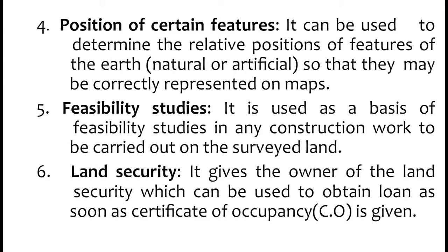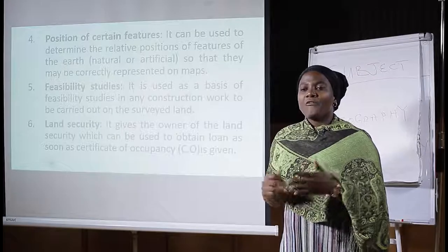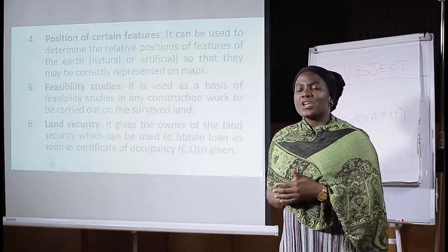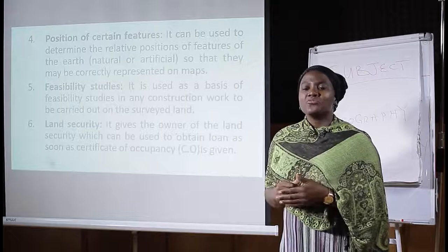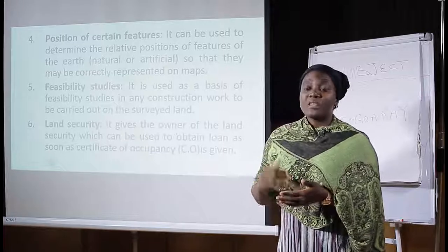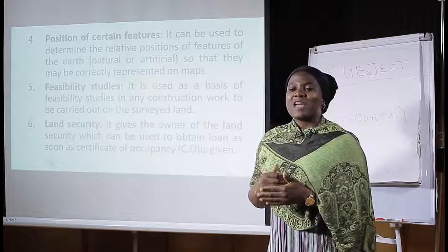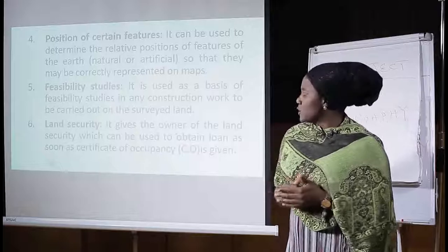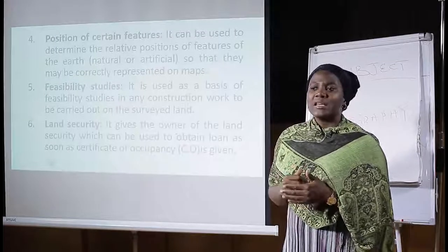Number four, position of certain features. Land survey can be used to determine the relative positions of features of the earth. These features can be natural or artificial, so that they may be collectively represented on the map. Like in Kaduna here, we have river Kaduna. Land surveyors can tell you the location of certain places in relation to river Kaduna — for example, the government house is north or south of river Kaduna. Using location, we can give exact dimensions including distance in meters or kilometers, and also the direction.